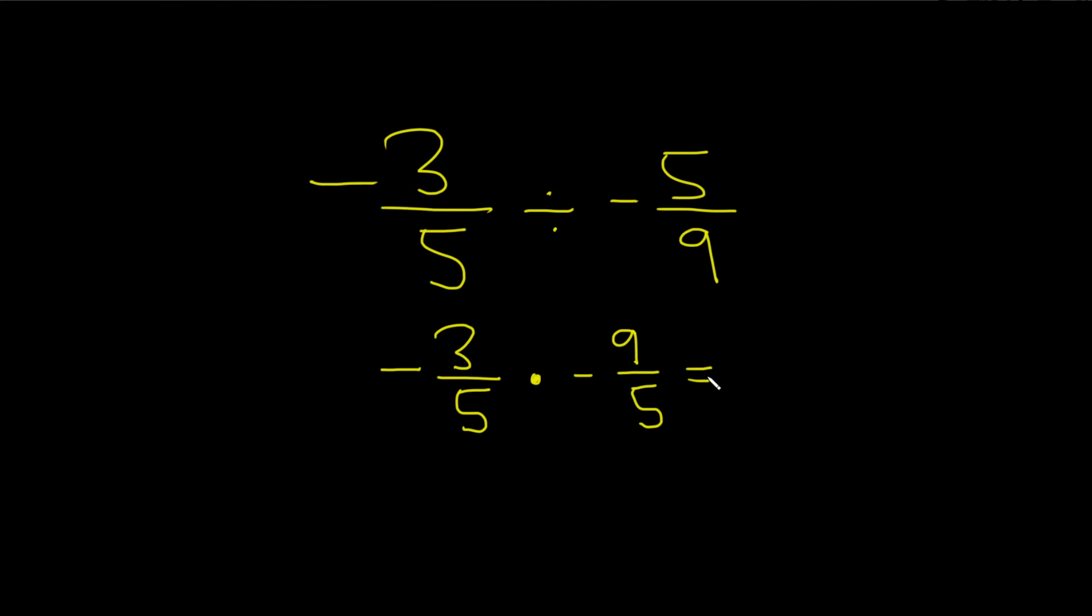So this is equal to—now we can multiply. Let's multiply straight across. 3 times 9 equals 27 over 5 times 5 equals 25.